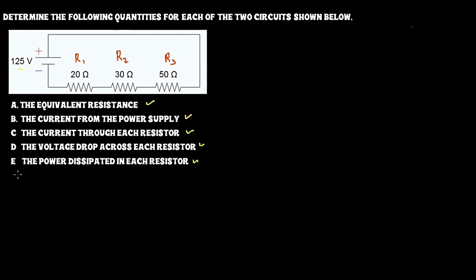The solution goes like this. First, the equivalent resistance. All the resistances are connected in series, so the equivalent resistance can be written as R1 plus R2 plus R3. That is 20 plus 30 plus 50 ohms, which gives you 100 ohm as the equivalent resistance.